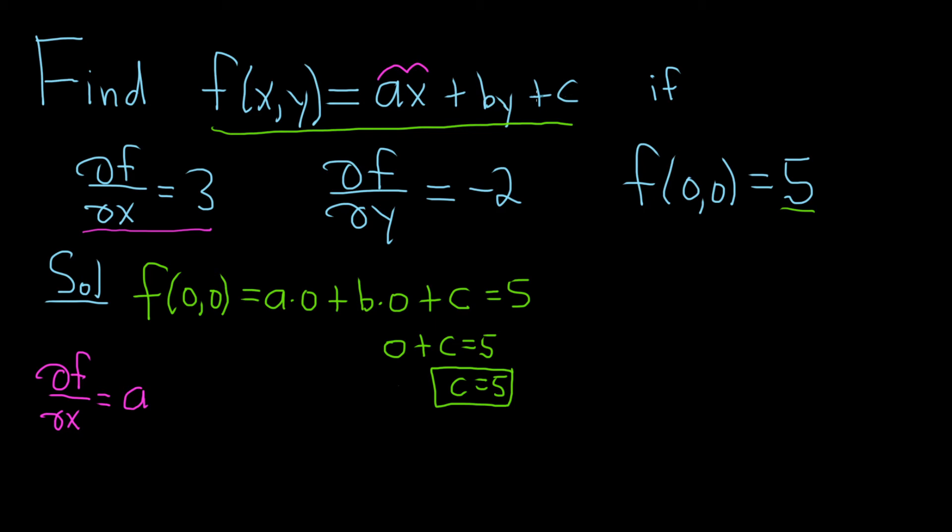So all of this is, the y is constant, the b and c are constants already, so all of this is 0. So plus 0, plus 0, and that's equal to 3. So that means a is equal to 3.